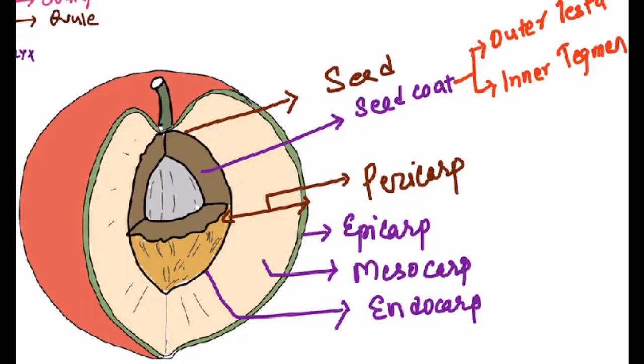If you have a testa and a tegmen, the surface of the testa is the outer surface. The seed coat testa is the outer layer and the seed coat tegmen is the inner layer. Inside the seed coat there is nutritive tissue called endosperm.